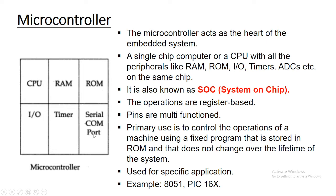When you compare the microcontroller with the microprocessor: in the microprocessor there is only a CPU consisting of an ALU, CU, and some registers. Whereas in the microcontroller, the CPU, RAM, I/O, timer, and serial port are all on the same IC — which makes it a system-on-chip or a computer-on-chip. The microcontroller also has many registers, so all operations are register-based and data is fetched from the registers.